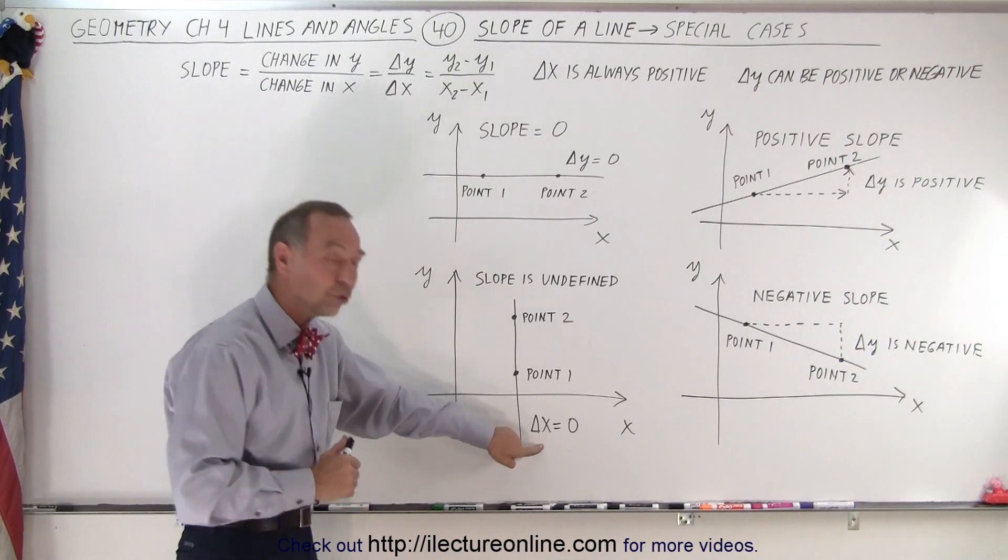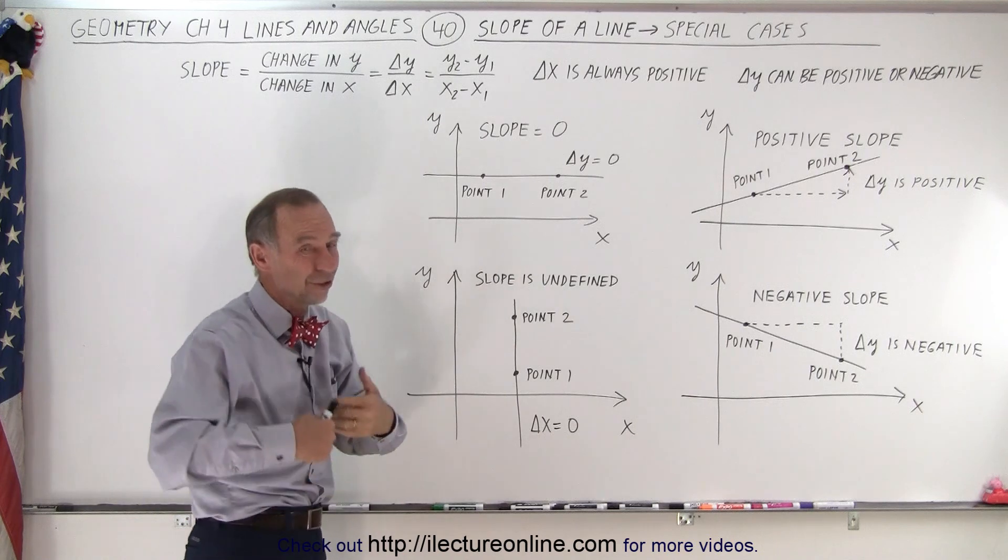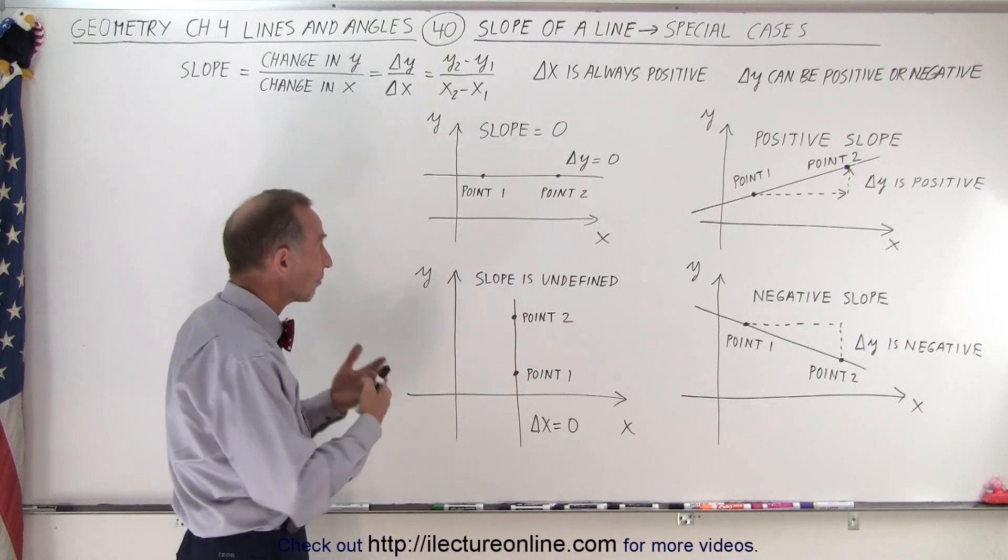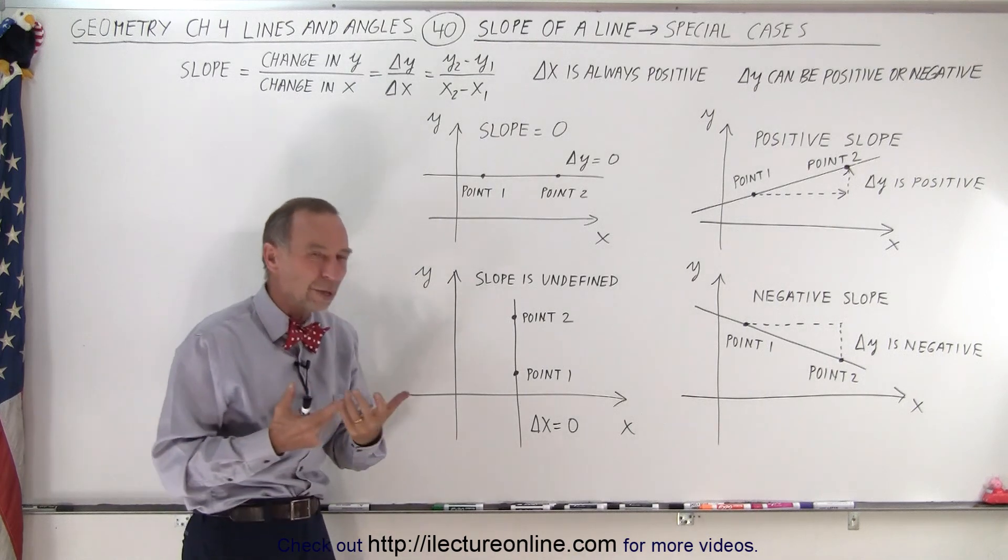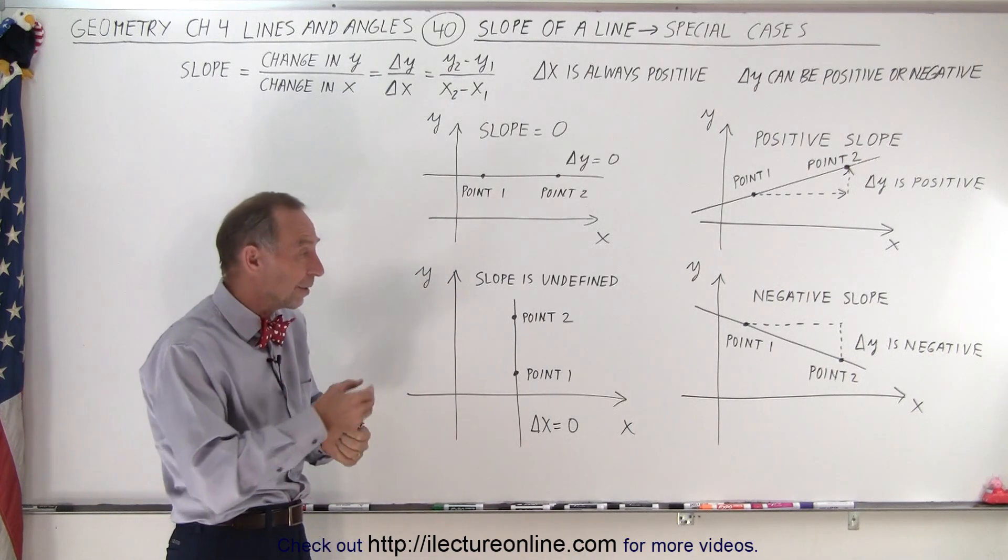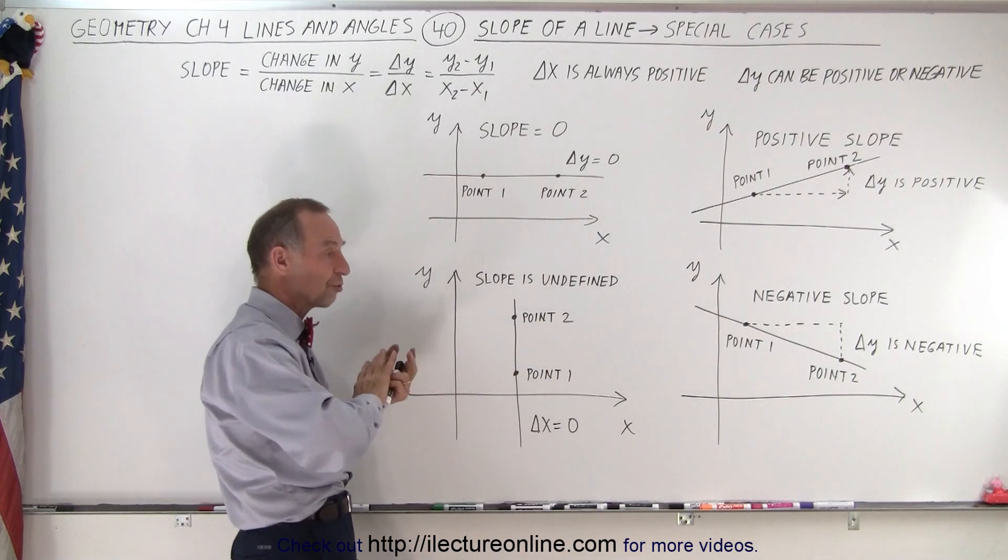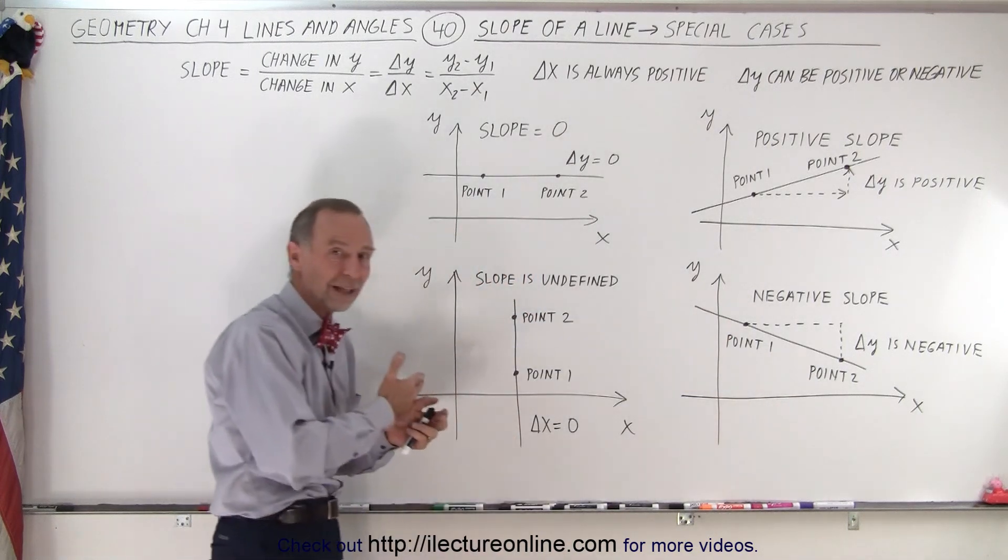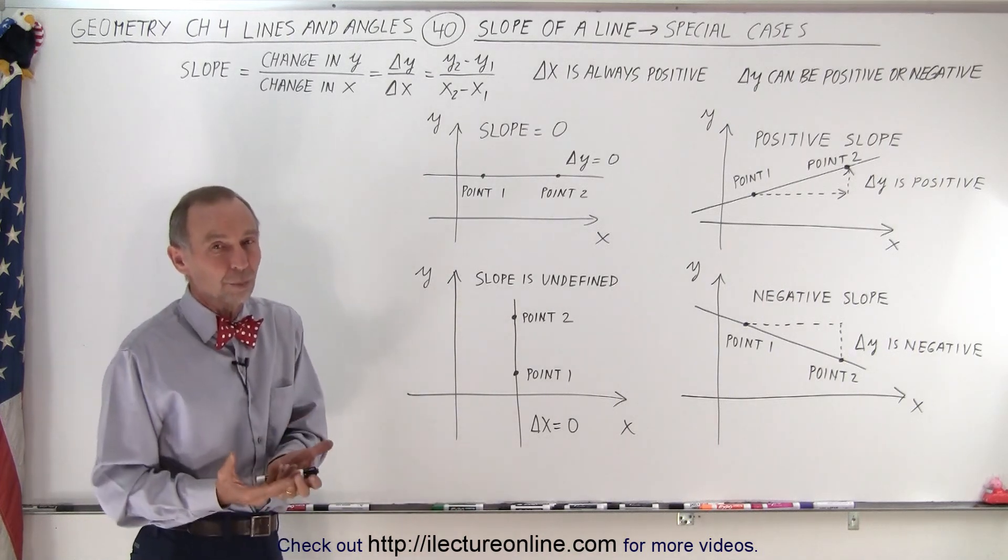And since there's no change in the X direction, the denominator becomes 0, and since you cannot divide by 0, that fraction, that ratio becomes undefined. Another way in which you can think about it is that by definition, when we go from point 1 to point 2, we're supposed to travel to the right. We're supposed to have a change in X. And if you can't have a change in X, you can't define the slope.